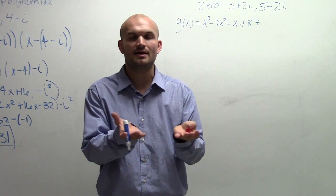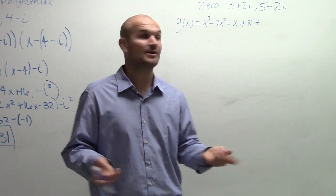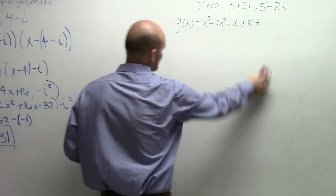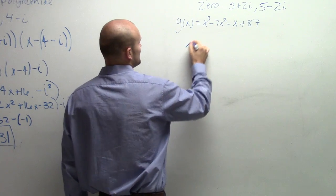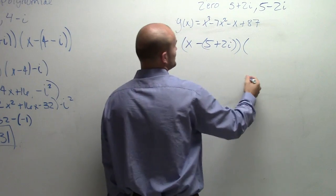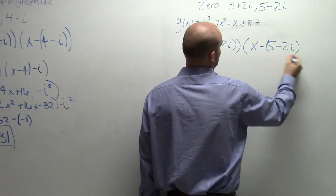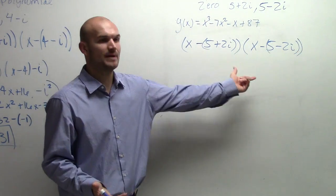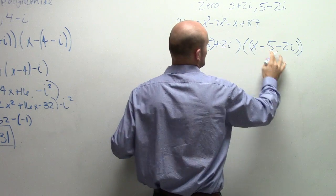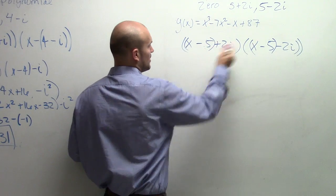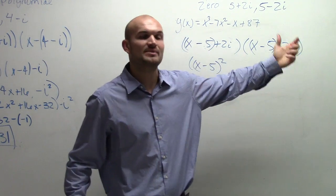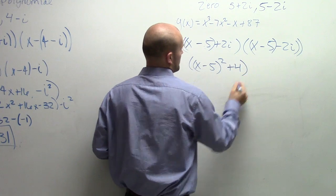Remember what happens when we multiply a complex number by its conjugate — we get rid of the i. So we have the factors (x minus (5 plus 2i)) and (x minus (5 minus 2i)). If we multiply these out, we can rewrite using the associative property and we have a difference of two squares, so we get (x minus 5) squared, and 2i times negative 2i is negative 4i squared, which equals plus 4.